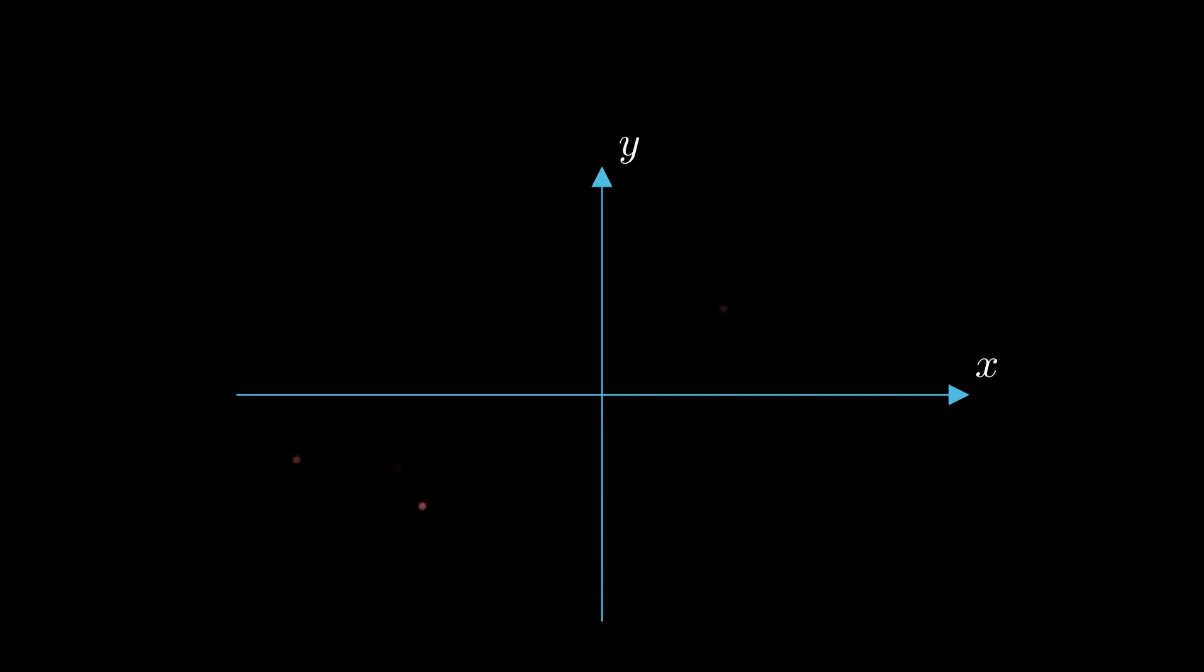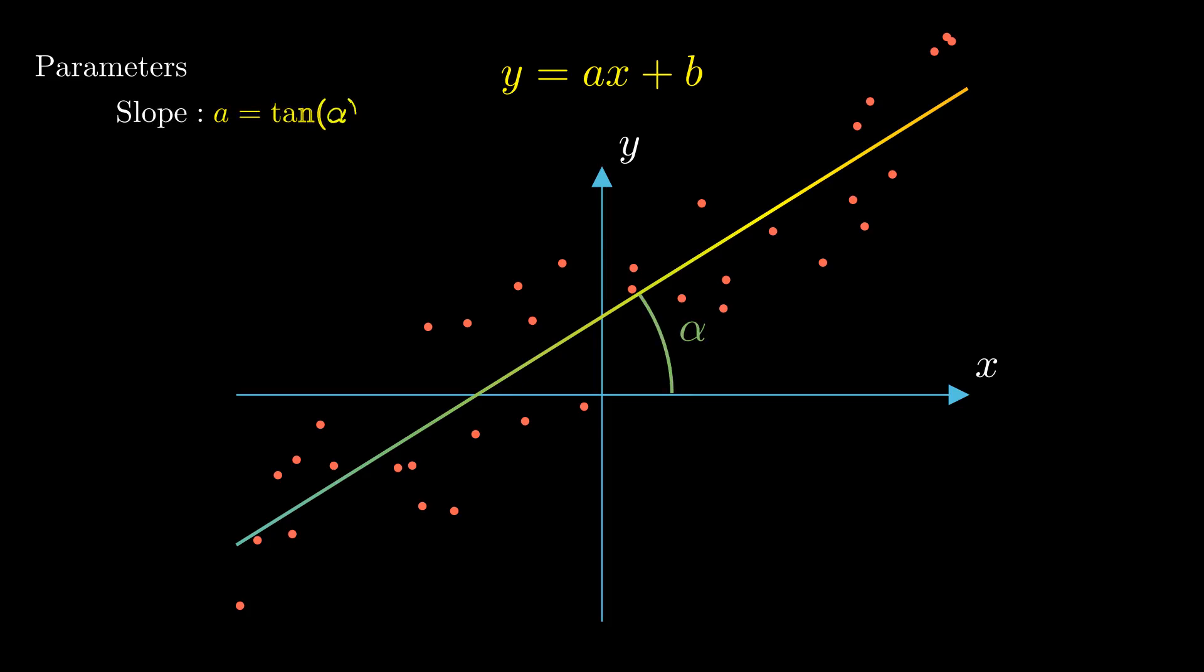A good place to start is a related algorithm called linear regression. Given a collection of data points, it finds the best fitting straight line. To define a linear function, you need two parameters. The first parameter is called the slope and is defined as the tangent of the angle between the line and the x-axis. The second parameter is called the intercept. It defines the shift along the y-axis.